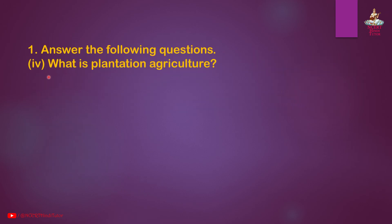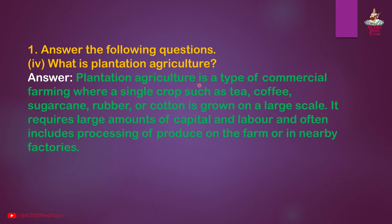Question 4: What is plantation agriculture? Answer: Plantation agriculture is a type of commercial farming where a single crop such as tea, coffee, sugarcane, rubber, or cotton is grown on a large scale. It requires large amounts of capital and labor and often includes processing of produce on the farm or in nearby factories.